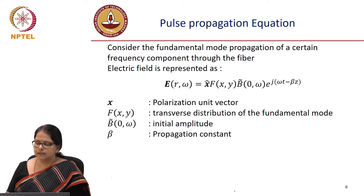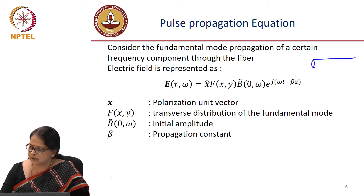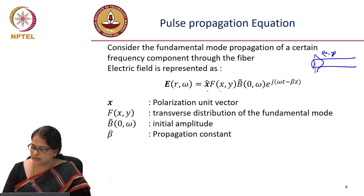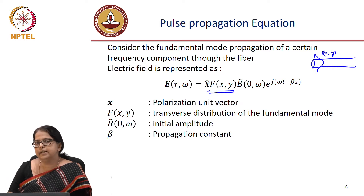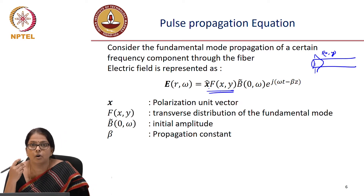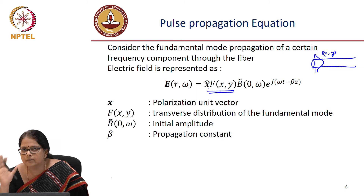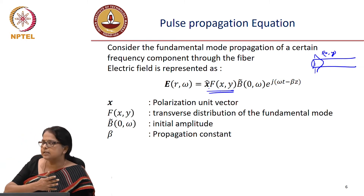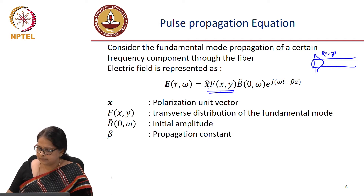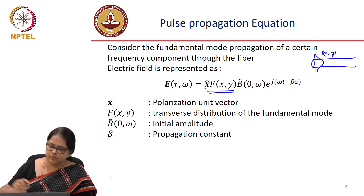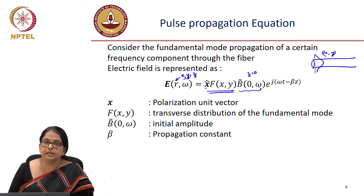Consider fundamental mode propagation, which means we are talking about a single mode fiber and the propagation of the fundamental mode. This fundamental mode is represented by f(x,y) — it has a transverse distribution f(x,y). We start with the frequency domain representation because all what we know about dispersion is the fact that different frequencies propagate with different speeds. x̂ is the polarization direction, and b(0,ω) represents the amplitude of a specific frequency ω at z equal to 0.